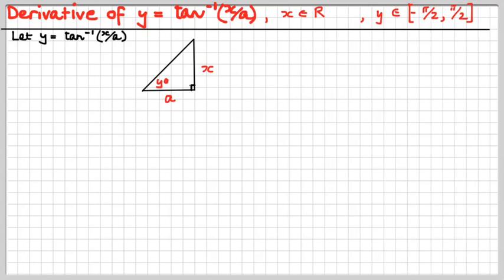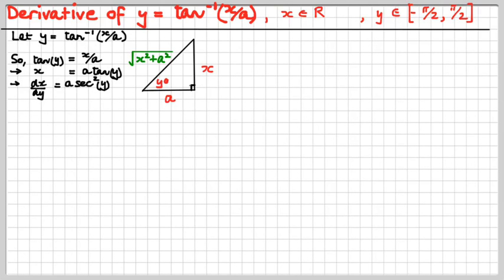Maybe you should pause the video and have a go yourself. Alright — we're saying, therefore, tan of y equals x over a, therefore x is a tan y. Therefore dx/dy is a sec squared y. And therefore dy/dx would be 1 over dx/dy, which would be 1 over a sec squared y. There's the star equation.